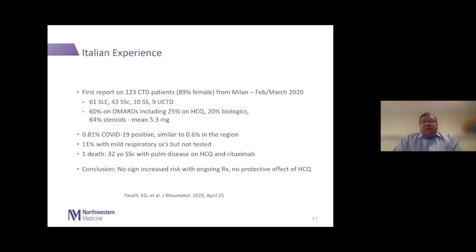From the beginning we've wondered whether our patients on therapy are sicker. The first relevant report, just out from Italy, from Milan, looked at 123 patients with connective tissue diseases — mostly lupus, some scleroderma and Sjögren's. Most were on disease-modifying drugs including hydroxychloroquine, 20 percent on biologics, and a number on steroids. They found that infection rate was not very different from what they were seeing in the Milan region during February and March. Their overall conclusion was no sign of increased risk in patients on biologic and disease-modifying therapies, and they did not see a protective effect of hydroxychloroquine.